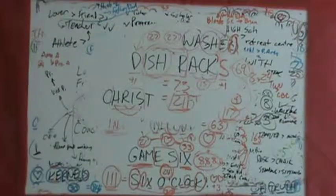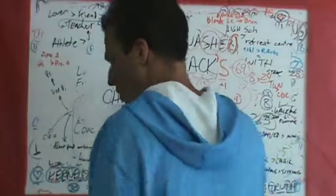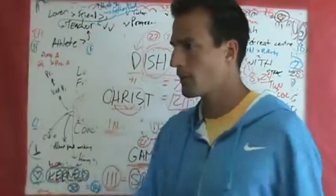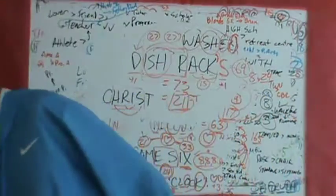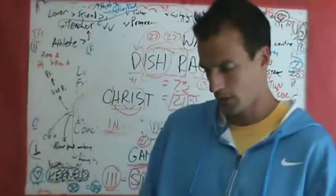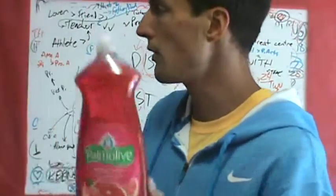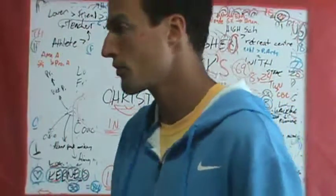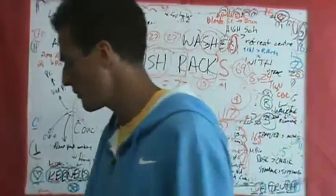Now, in addition to your dish rack and your dishwasher, you of course need soap. Soap divides by 3. You've got 3 plus 1's that added 36 plus the OS 51. You can get Palmolive, which divides by 3, or you can get Dawn, which divides by 3, and all the other brands are easily solved.